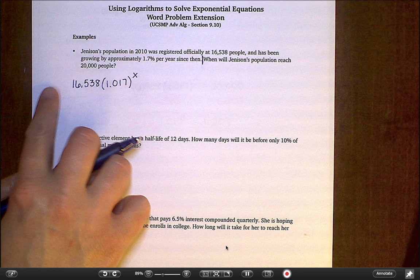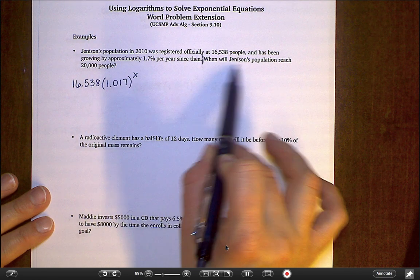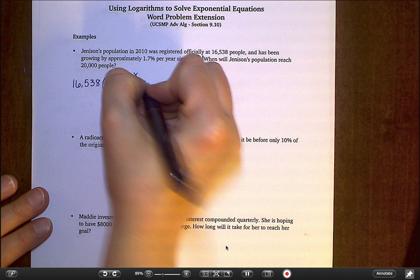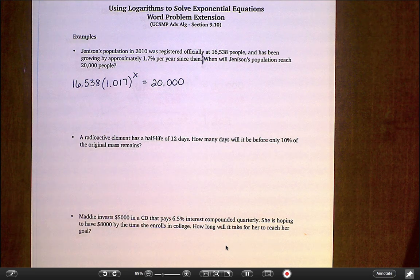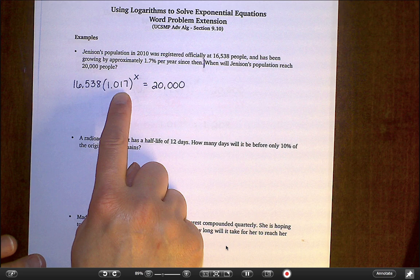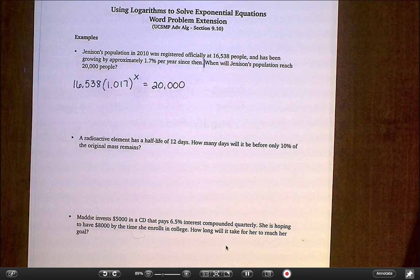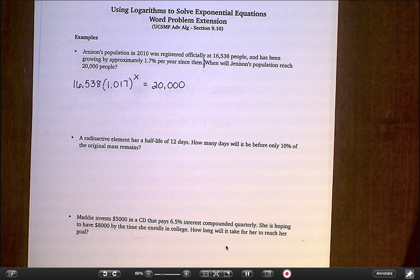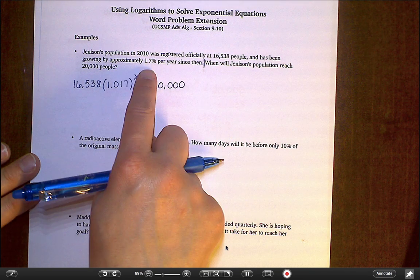Now, normally, we would write this as like a y equals, and it would be a function, and we could graph it and all that stuff. But this question says, when will the population reach 20,000 people? So we want to know, when will this equal 20,000? And if you think back to lesson 9.1 and 9.2, we did ask you these questions. And the best we could do at that time is to put this thing into our calculator and look in our table and try to get as close to 20,000 as we could. But now we have a way that we can actually solve it. I know you're just so excited about that.